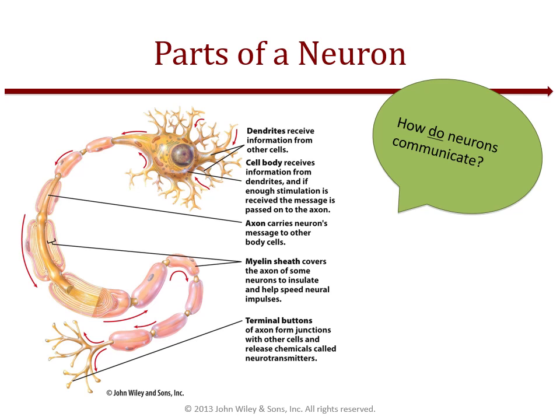A myelinated axon takes the action potential and moves it at least 10 times faster — jumping from 10 to 100 meters per second. Within a bare axon, the action potential at those thin points jumps from one node to the next rather than traveling slowly across the entire axon. Think of it as taking shortcuts.